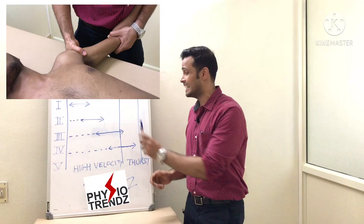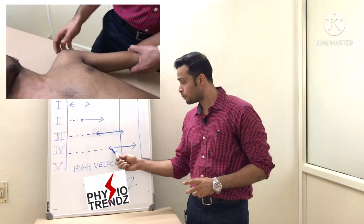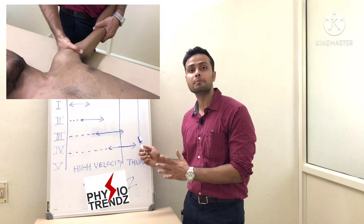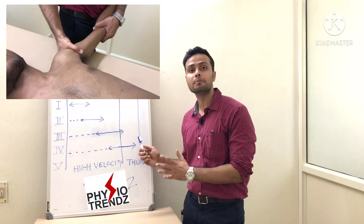Grade 3 is large amplitude rhythmic oscillations reaching up to the tissue resistance limit. Grade 4 is small amplitude rhythmic oscillations given in the end range of the available range of motion. And grade 5 is high velocity thrust, which is also called as manipulation.